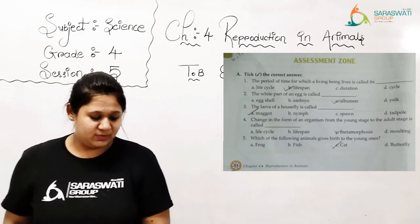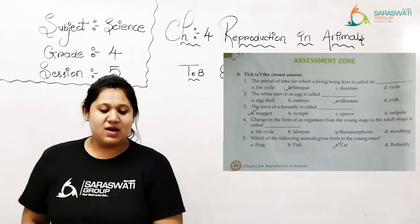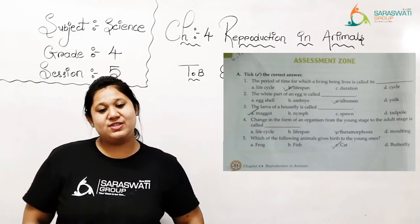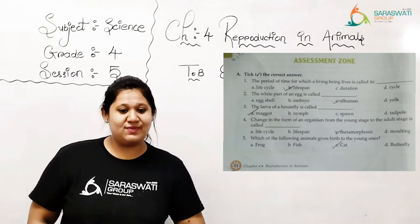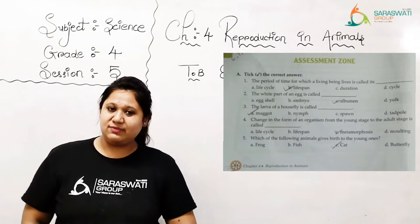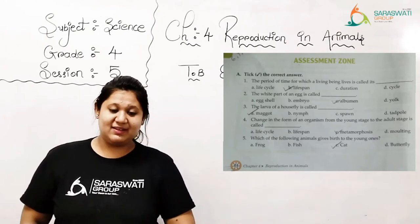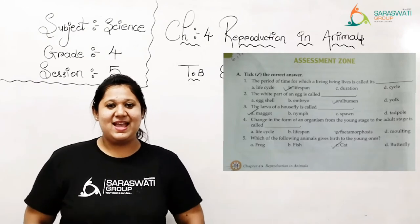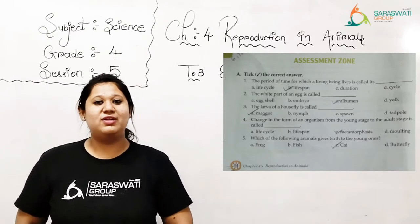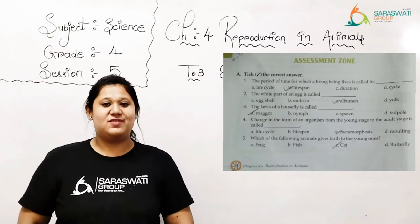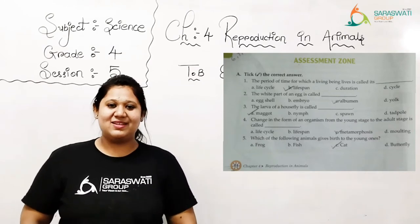Now number 3: the larva of the house fly is called A) maggot, B) nymph, C) spawn. This is so easy. As we all know, the larva of the house fly is called maggot. We are supposed to tick on A. Done.